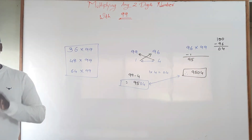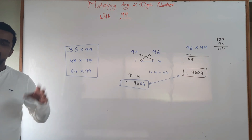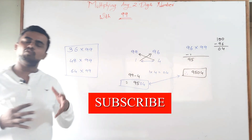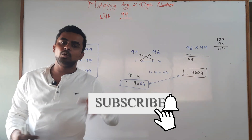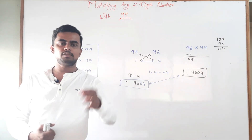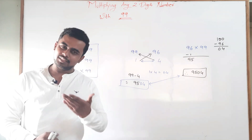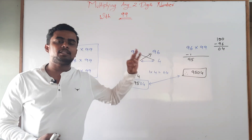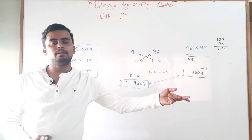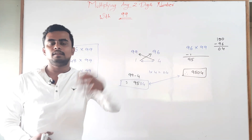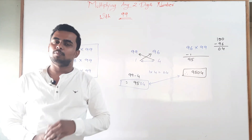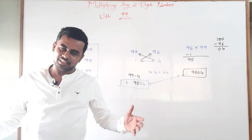That is how you multiply any two-digit number with 99. Thank you for watching this video. Subscribe to my channel for more such videos. In the next video we will see multiplication of three-digit numbers with 999 — stay tuned to this channel for more such videos. Thank you.